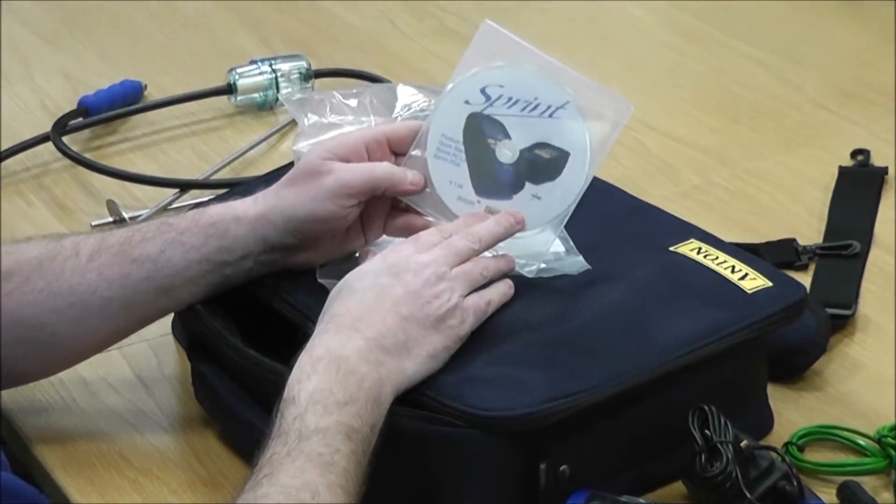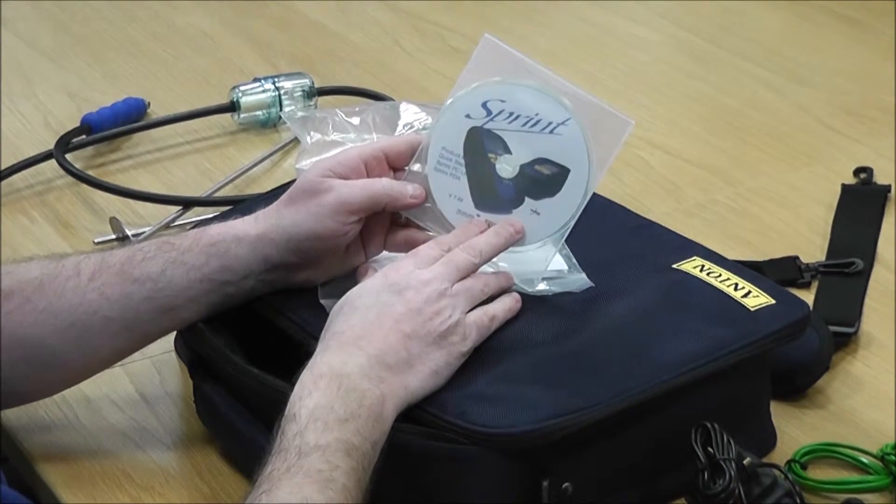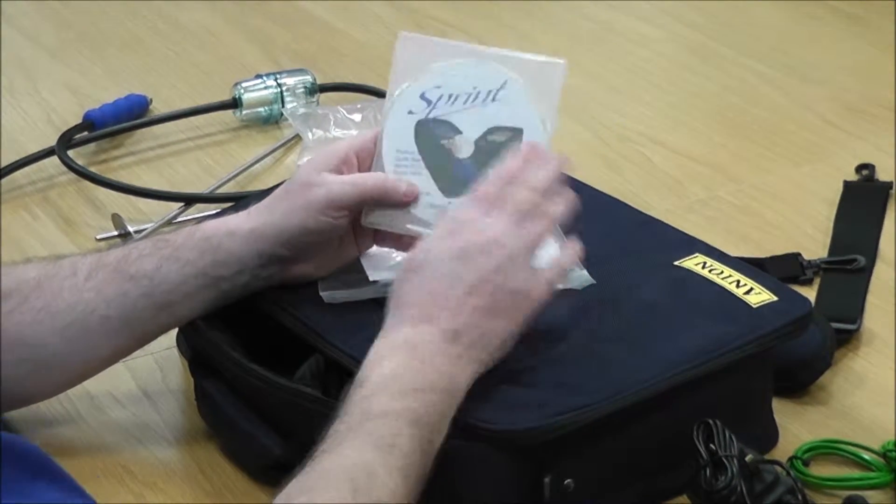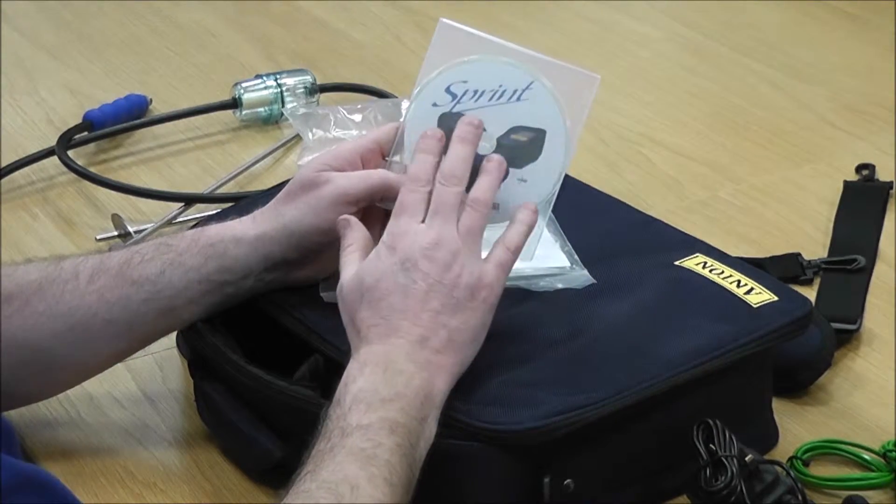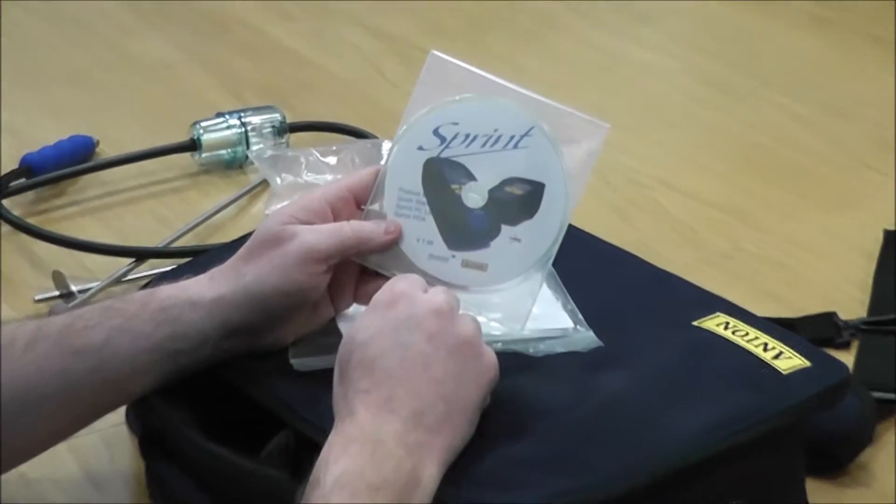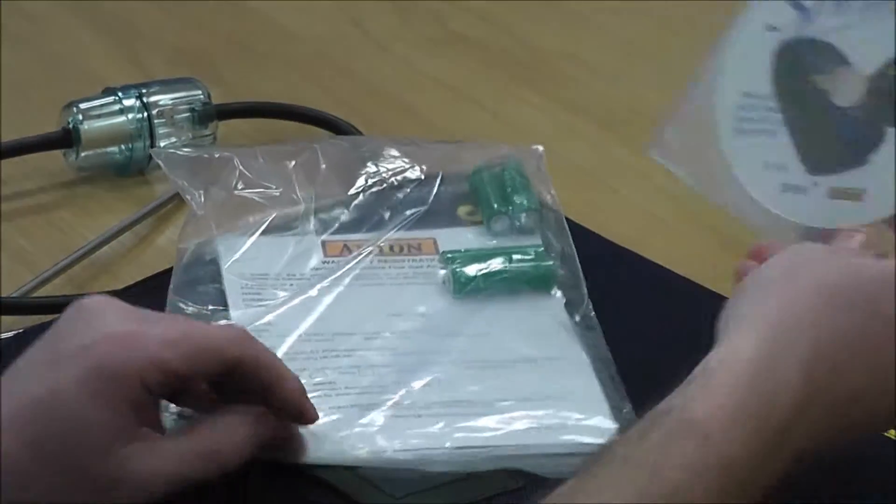You get the disc which has got the full instructions on it. It's got the quick guide on it and it's also got the software on there for the Sprint PC Lite. If you want the Bluetooth software for your Evo 3, that comes from the Play Store and it's free of charge.